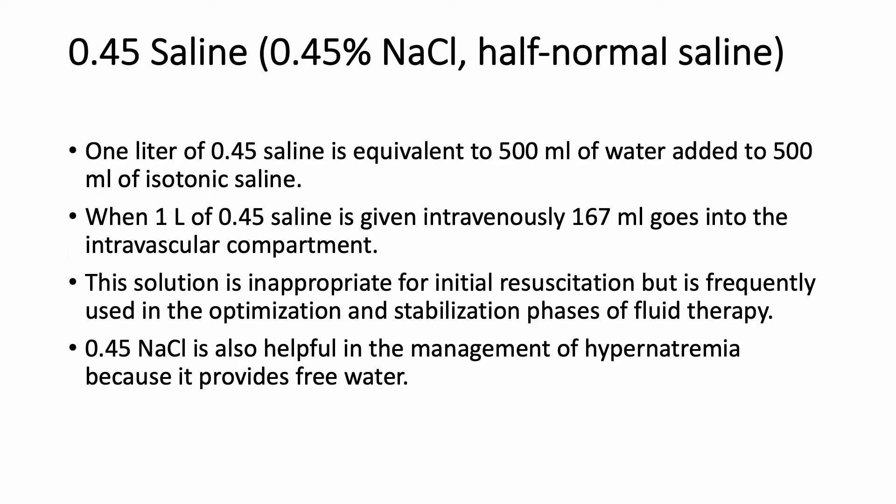Now let's talk about 0.45 normal saline, or half-normal saline. This is like taking 500 mL of sterile water and adding it to 500 mL of isotonic saline. When you give a liter of half-normal saline, you expand the intravascular compartment by only 167 mL, compared to 250 mL with normal saline. So for initial resuscitation in sepsis or hypotension, it's not a good choice — but it's good for optimization and stabilization. For example, in diabetic ketoacidosis, after giving three liters of normal saline, you may switch to D5 half-normal saline.